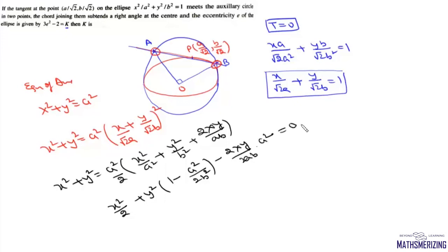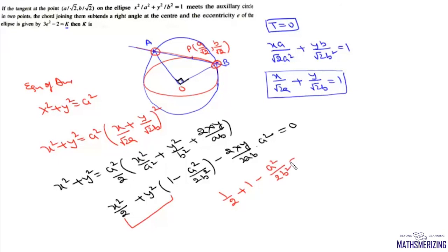Since these pair of lines are at right angles, we know that two lines represented by the pair of lines are perpendicular when the sum of coefficients of x² and y² is zero. So this means 1/2 + (1 - a²/(2b²)) = 0.